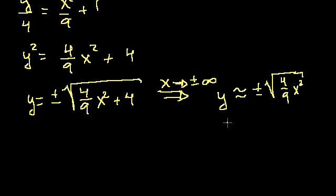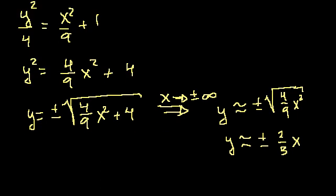And so y would be approximately equal to the plus or minus square root of 4 ninths is 2 over 3, right? Square root of 4 over square root of 9 times x. So these are the asymptotes. There's two lines here. There's y is equal to 2 thirds x, and then there's y is equal to minus 2 thirds x. So let's draw those two lines.